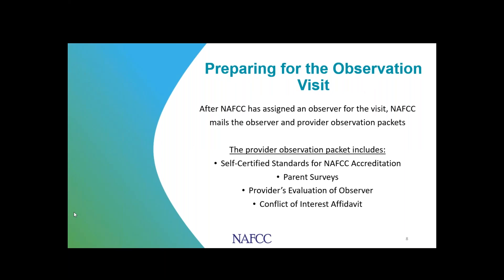After NAFCC assigns your observer, we mail both you and the observer a packet the month before your visit. If you don't immediately see the packet arrive, don't worry — it usually gets to you in the second or third week of the month prior to your visit. For example, if your visit is in December, you should have the packet by the third week of November. Your observation packet includes the self-certified standards for NAFCC accreditation, the parent surveys, the provider's evaluation of the observer, and the conflict of interest affidavit.